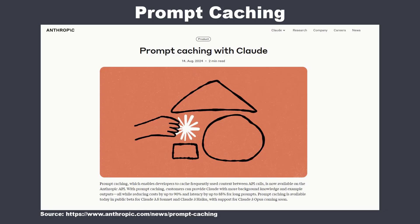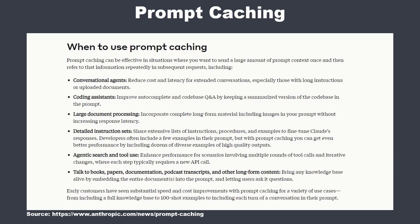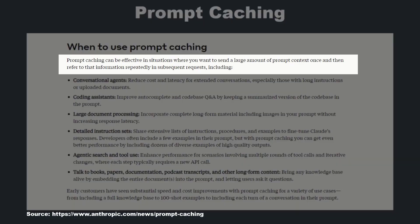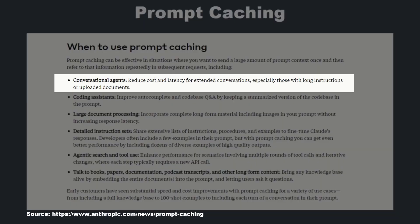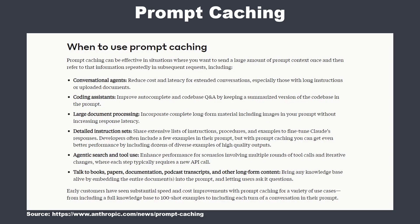Prompt caching is effective when you have a large amount of documents or context that you load once and then refer to in subsequent requests. It's very good for conversational agents with history — you don't have to send the system instruction and documents from the retriever or vector store multiple times to the LLM. You can just cache that.